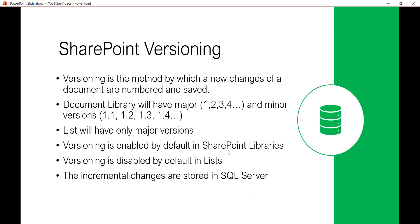First of all let us understand what is SharePoint Versioning. Versioning is a method by which new changes to a document or an item are numbered and saved, so that later you can compare with previous versions or even restore them. In SharePoint Document Library, the versioning types supported are major versions and minor versions. Major versions are like 1, 2, 3, 4, 5, and minor versions are like 1.1, 1.2, 1.3. A list will have only major versions — that's the key difference between a list and a library: a library supports both major and minor versions, while a SharePoint List supports only major versions.